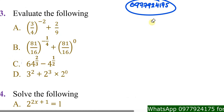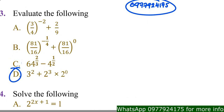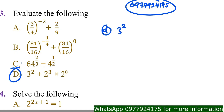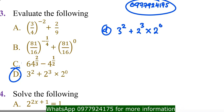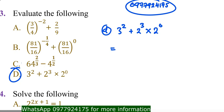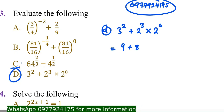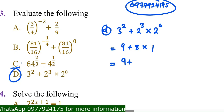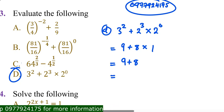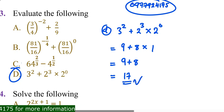Part (d): 3² + 2³ × 2⁰. Evaluate each term: 3² = 9, 2³ = 8, and 2⁰ = 1. Following BODMAS — multiplication before addition — you do 8 × 1 = 8 first, then 9 + 8 = 17. The answer for part (d) is 17.